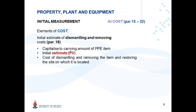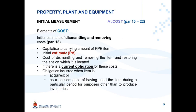These costs can refer to dismantling, removing, and restoration costs — that depends on the nature and type of asset you are dealing with. What is very important is that there must be a current obligation for these costs at the time of initial measurement of the PPE item. Only then will you be allowed to capitalize the cost to the PPE item. This obligation can be incurred either when the asset is acquired or as a consequence of having used the asset.